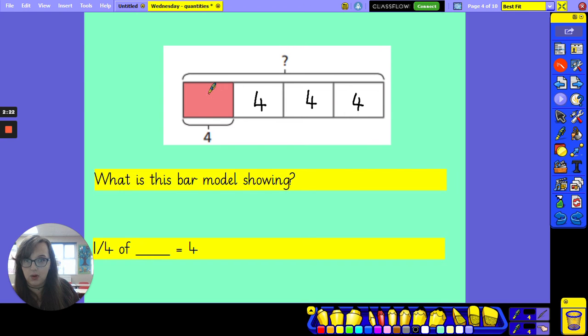So I can see here, one quarter is four. Two quarters is eight. Three quarters is twelve. Four quarters, four times four, is sixteen. It's sixteen altogether. Sixteen split into four parts. And I know this as well, because four times four, four lots of four, is sixteen.